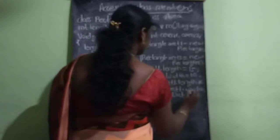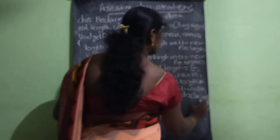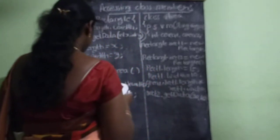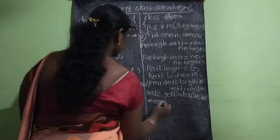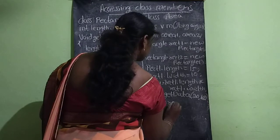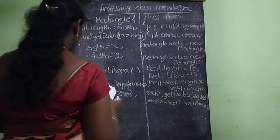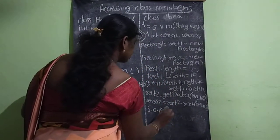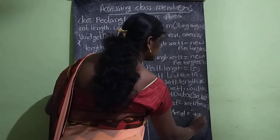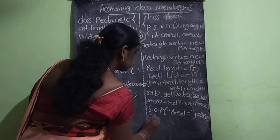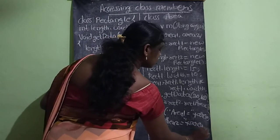Then call rect2 dot get data with parameters 20 and 12. This means x equals 20 and y equals 12, so length becomes 20 and width becomes 12. Next, area2 equals rect2 dot rect area. For output: System.out.println area1 equals plus area1, and System.out.println area2 equals plus area2.